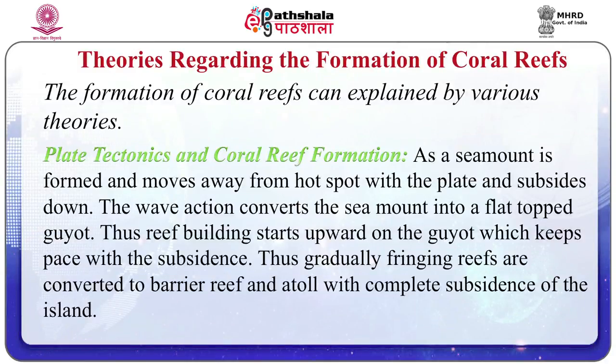The third theory is plate tectonics and reef formation. The subsidence theory given by Darwin is supported by modern evidence based on the concept of plate tectonics. The corals grew upward at a rate of 1.8 meters per 1,000 years, easily keeping pace with sea level changes. The subsidence theory also deals well with the modern idea of seafloor spreading and subsidence away from the oceanic ridges. As a seamount is formed and moves away from a hot spot with the plate and subsides, wave action converts the seamount into a flat-topped guyot. Thus reef building starts upward on the guyot, keeping pace with the subsidence. Gradually, fringing reefs are converted to barrier reefs and atolls with complete subsidence of the island.